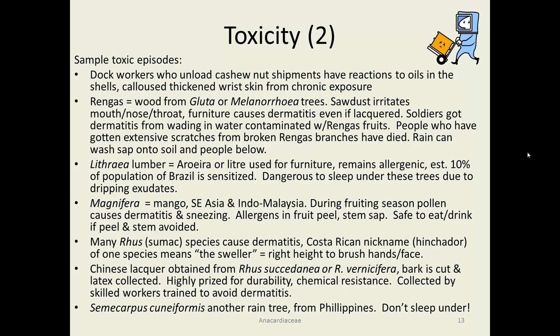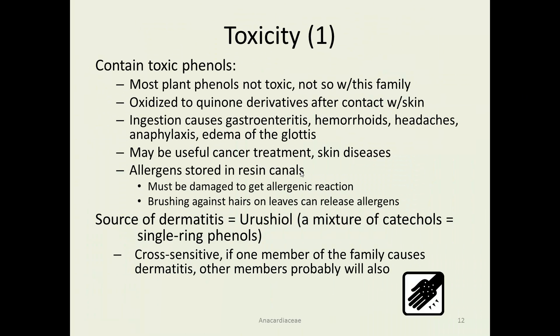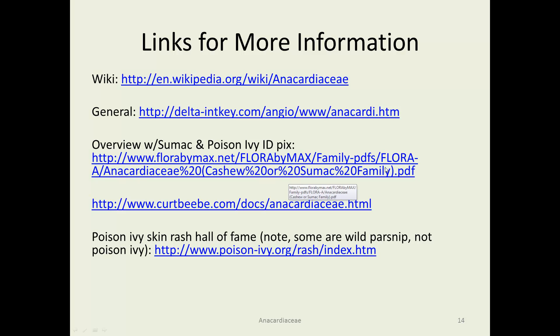Mangoes: if the fruit is ripe and you're avoiding the stem, you're okay. Many sumac species exist beyond those in Iowa — one in Costa Rica is called 'the sweller' because it's at the right height to brush against you and cause swelling. Chinese lacquer is obtained from a rosid species very carefully by workers who understand the implications — it's very durable, takes a high shine, and at one point people actually paid their taxes in latex collected from that species. Semicarpus is another genus you want to make sure you don't sleep underneath. For resources: poisonivy.org rash pages for pictures, and Flora by Max for good poison ivy identification. That concludes the Anacardiaceae.